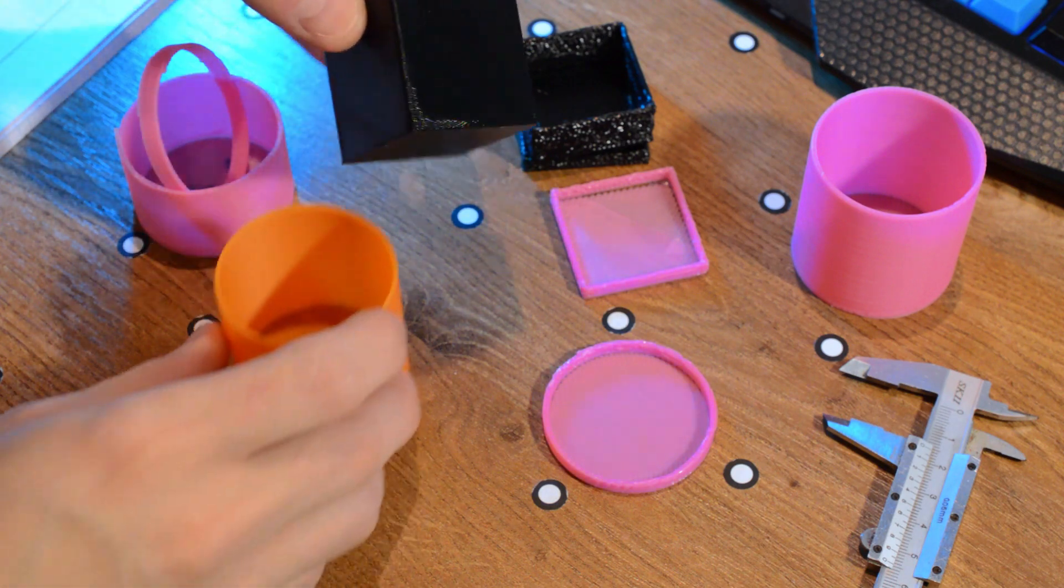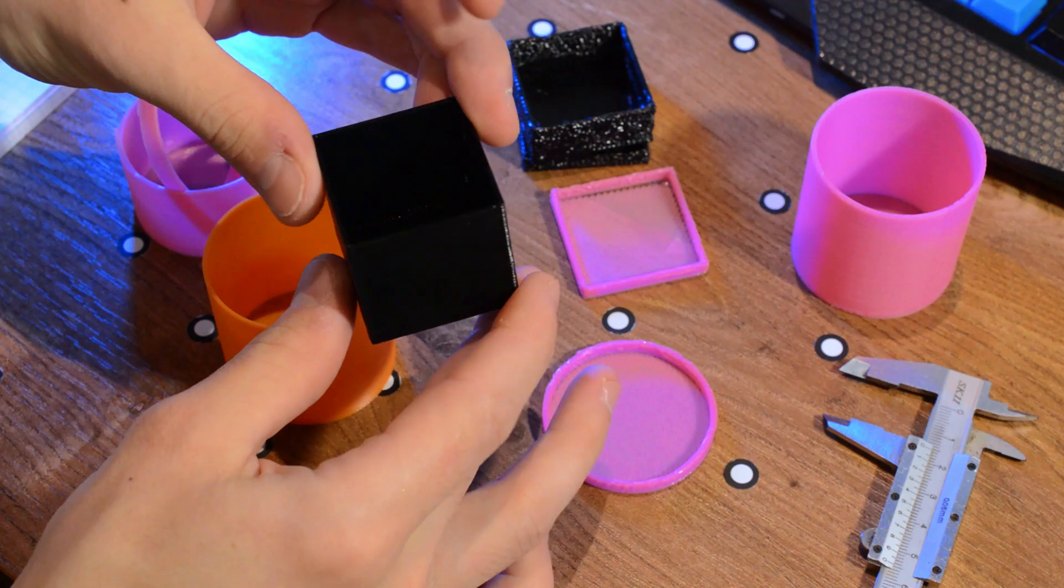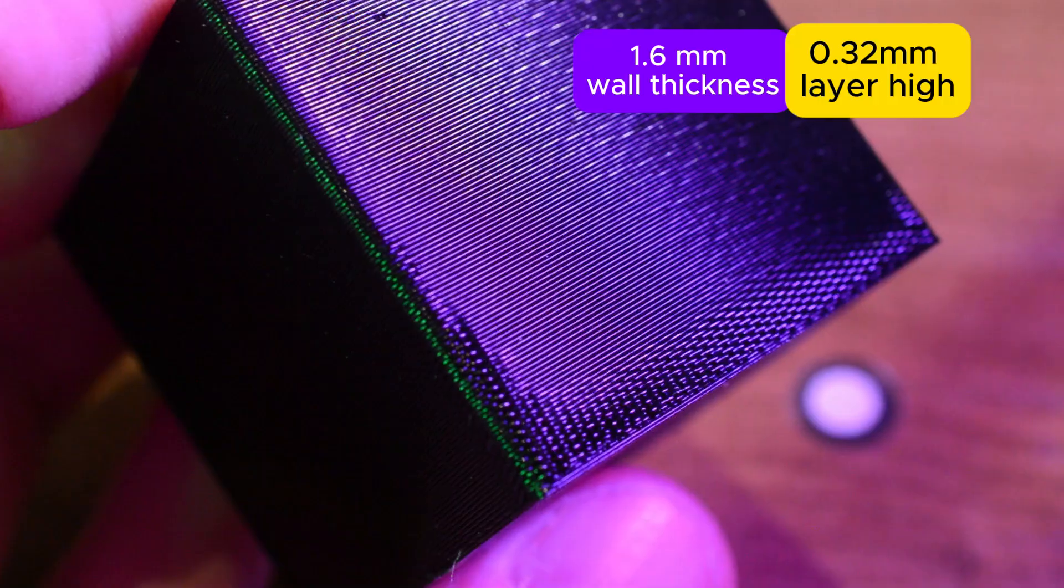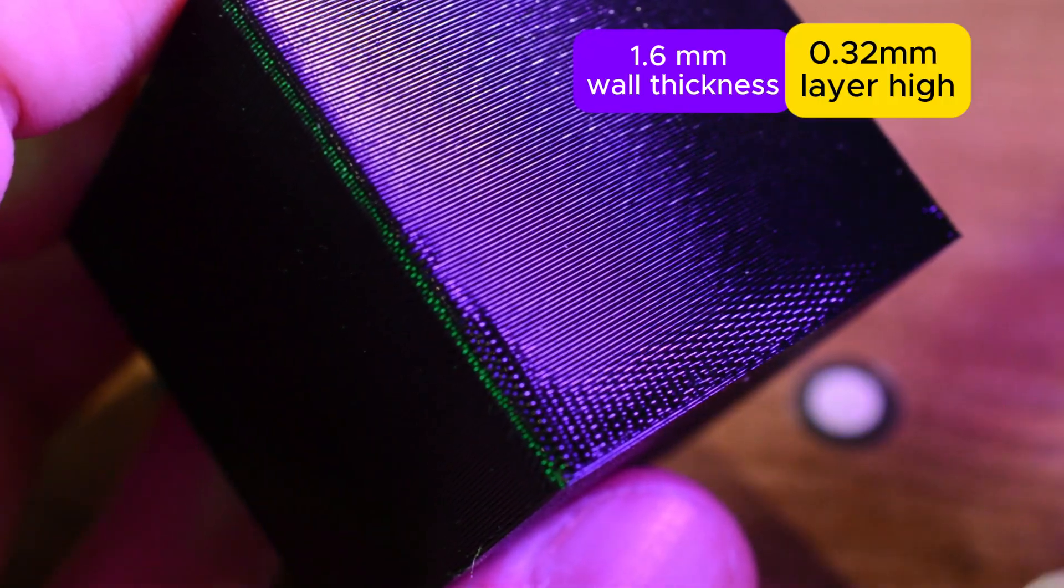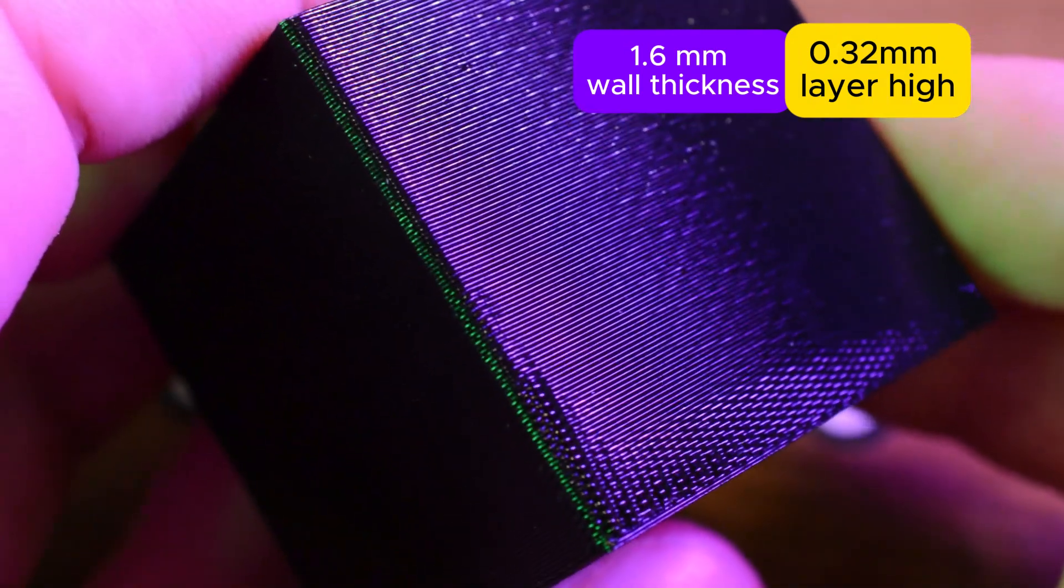Next example is Black PETG Cube, which was printed with 1 wall, 1.6 mm wide, 0.32 mm layer high. Also, pressure advance was set to 0.12 mm.